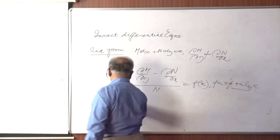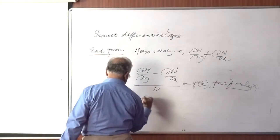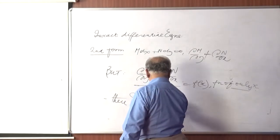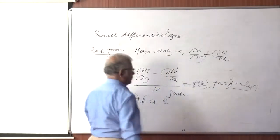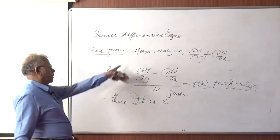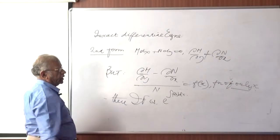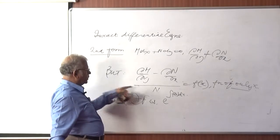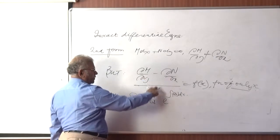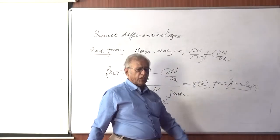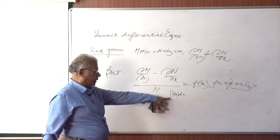Then an IF is e to the power of integral f(x) dx. So the equation remains what it was. That criterion is the criterion for equation being inexact. But we observe that the structure of m and n are such that this difference divided by n works out to be a function of x only. Then the integrating factor is e to the power of integral f(x) dx.